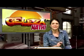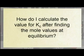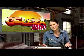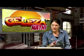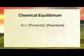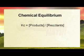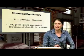Thank you for that question, Bianca. She asked: how do I calculate the value of Kc after finding the mole values at equilibrium? We need to look at what we call a Kc expression — essentially a formula. This formula changes depending on the reaction. The core expression to memorize is: Kc equals the concentration of the products divided by the concentration of the reactants, written using square brackets.